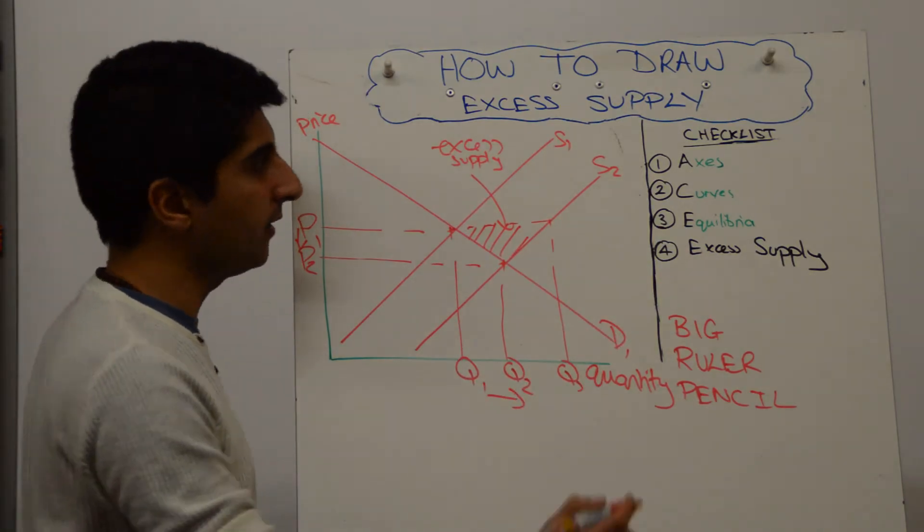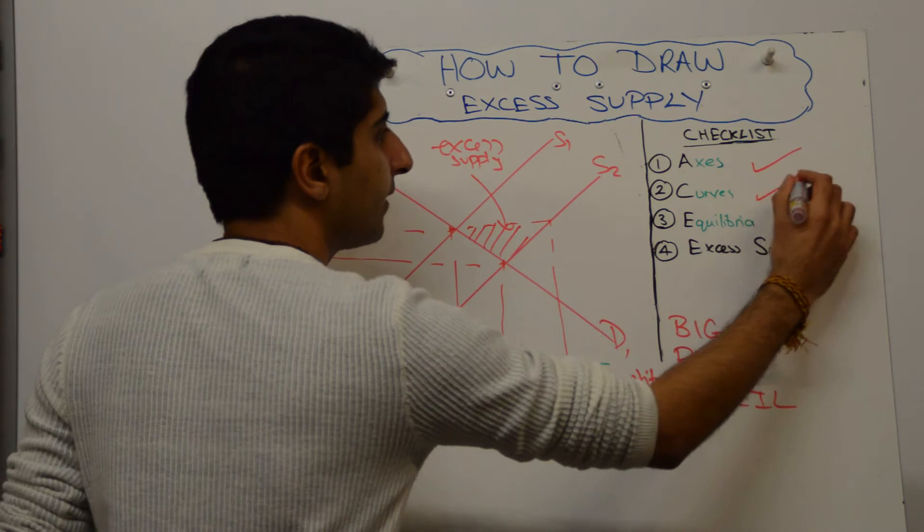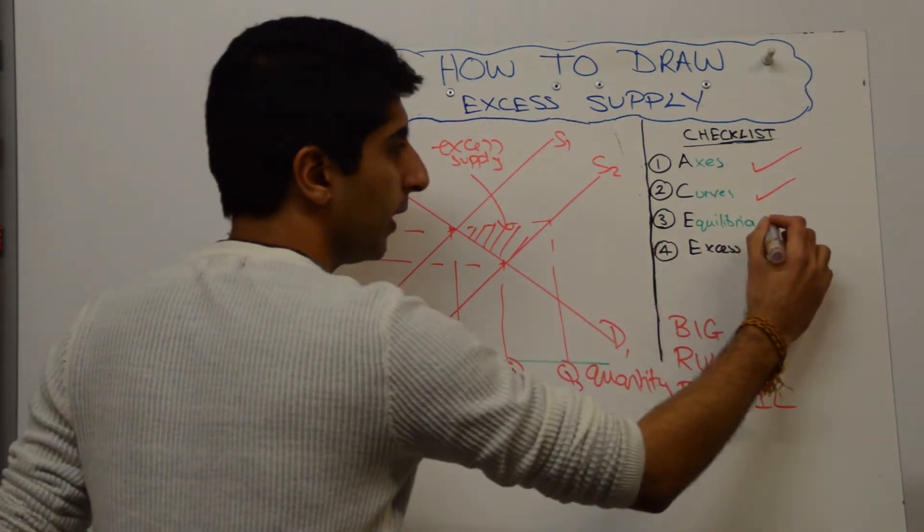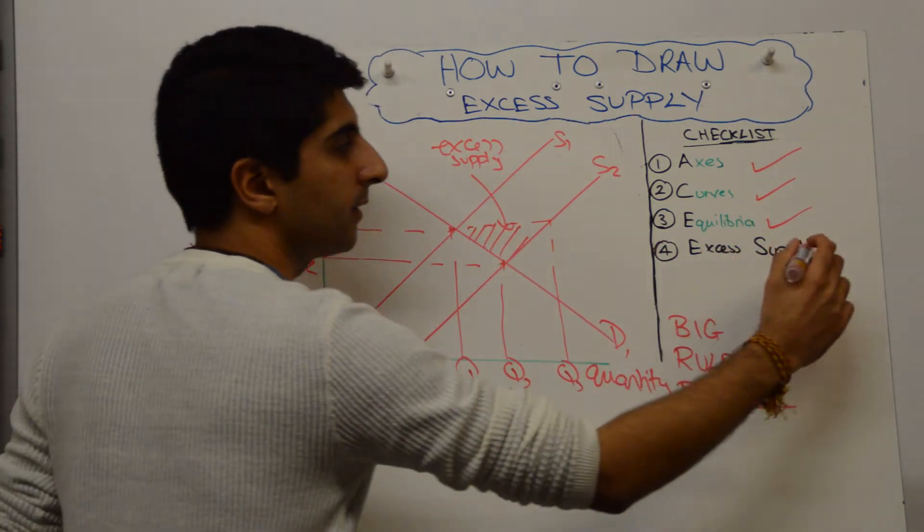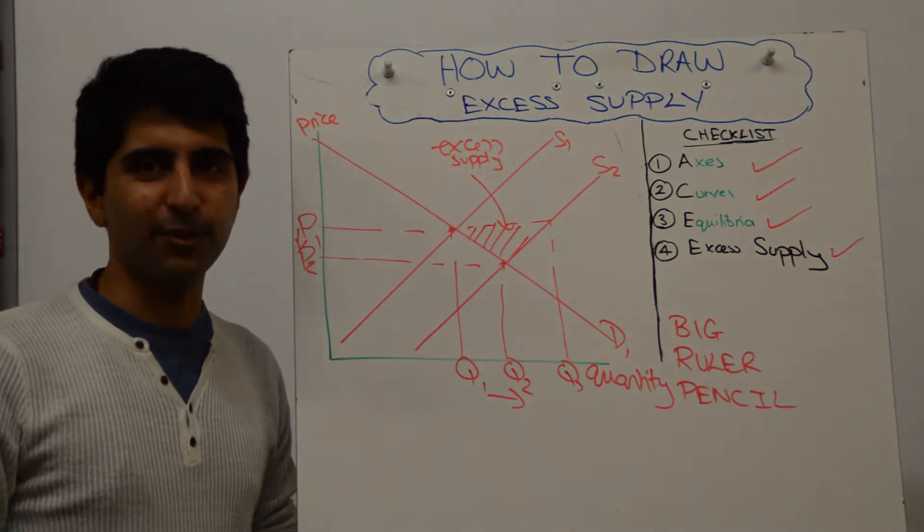Have we hit the key points in our checklist? Have we labelled our axis? Yes. Have we labelled our curve? Yes. Have we labelled our equilibria? Yes, we have. Have we shown and clearly labelled the excess supply? Yes. We haven't rushed too far ahead, which is a big risk when it comes to drawing diagrams.